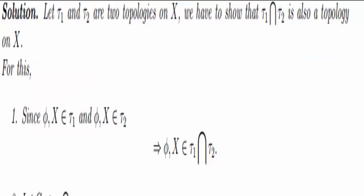Let τ₁ and τ₂ be topologies on X. We have to prove that the intersection τ₁ ∩ τ₂ is also a topology on X. Proof.